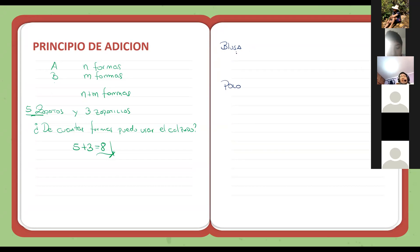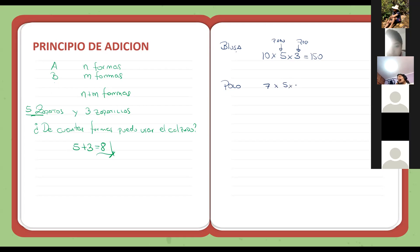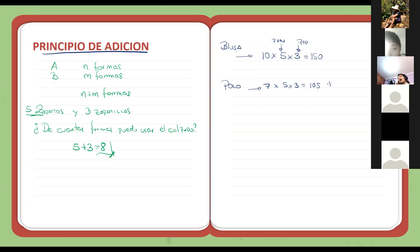En el caso de la blusa, digamos que tengo diez blusas, lo combinamos con cinco pares de zapatos y con tres pantalones. Tendríamos diez por cinco por tres, sería ciento cincuenta formas. Con polos, digamos que me hubieran dado siete polos, también tendría que combinarlos con los mismos pantalones y con los zapatos: siete por cinco por tres, esto es ciento cinco. Con blusa tenemos ciento cincuenta formas y con polos ciento cinco formas. Identificamos que no podemos utilizar blusa y polo al mismo tiempo, por lo tanto se trata del principio de adición. Tendríamos que sumarlo, sería un total de doscientos cincuenta y cinco.